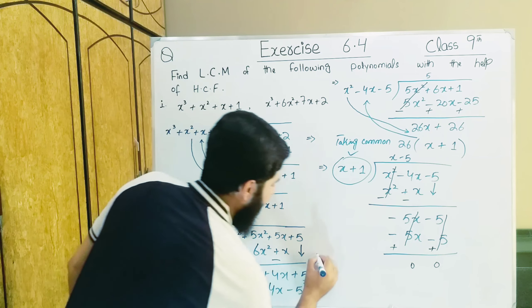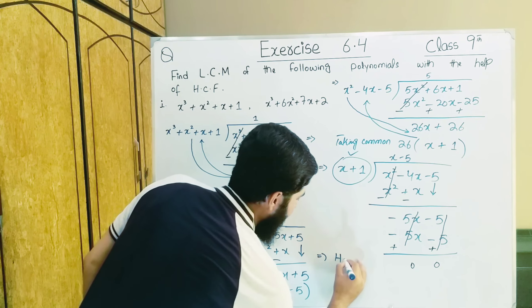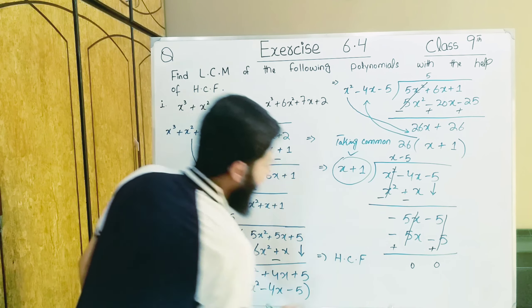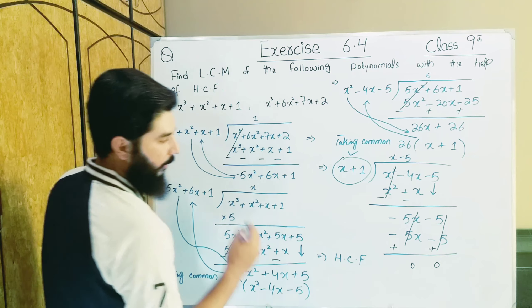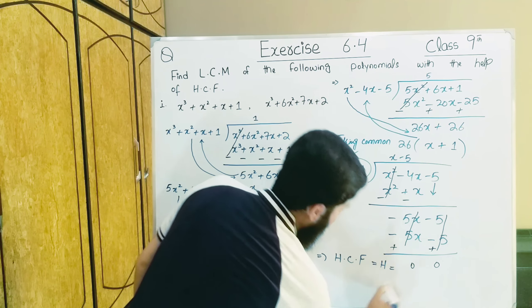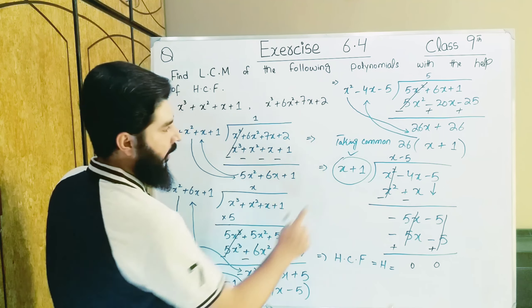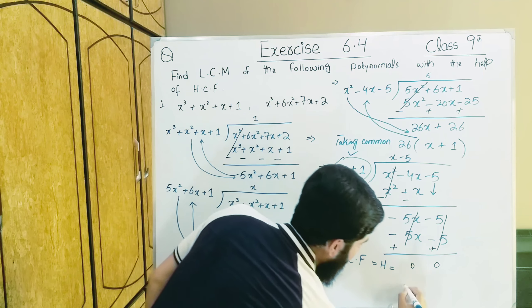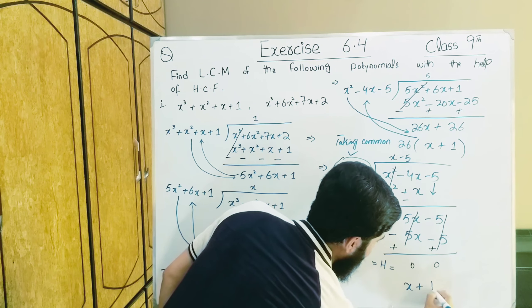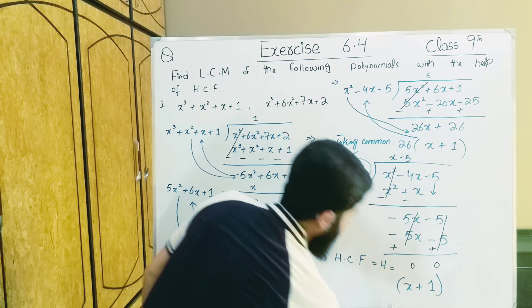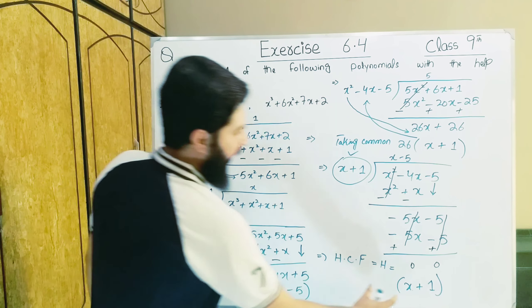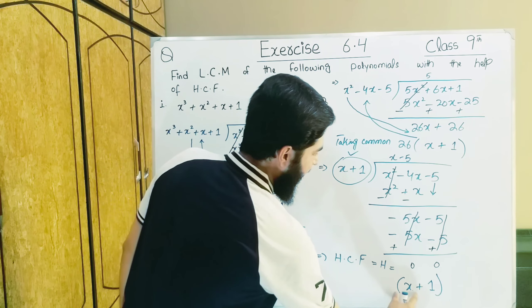Now when signs change: negative and positive cancel. What remains is 0. So our HCF has arrived. We write: HCF = x + 1.